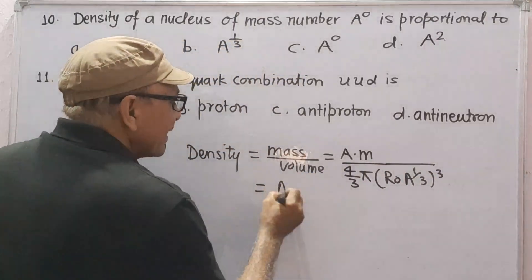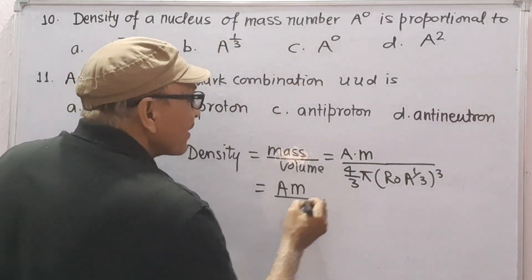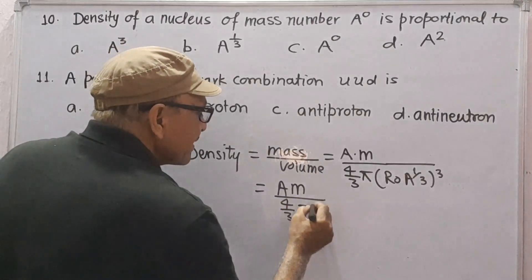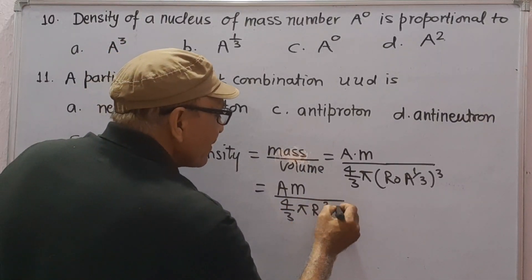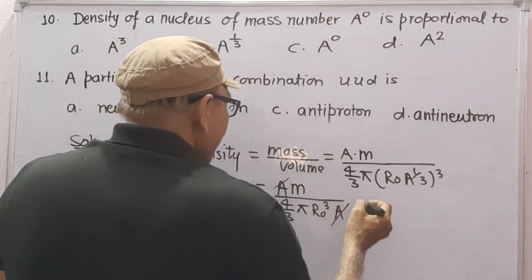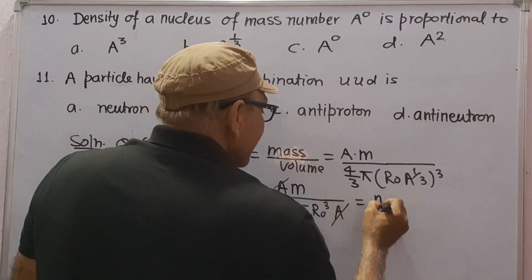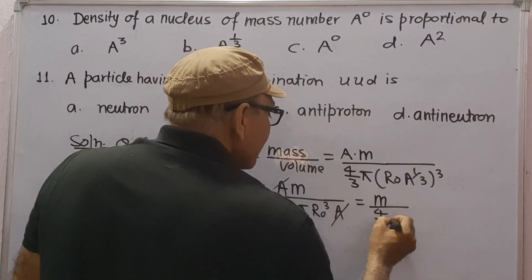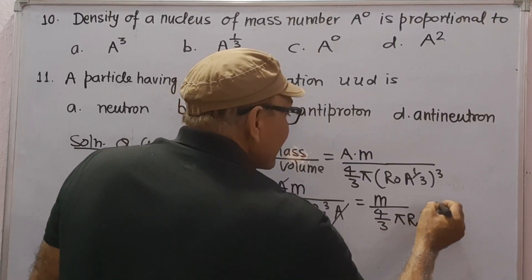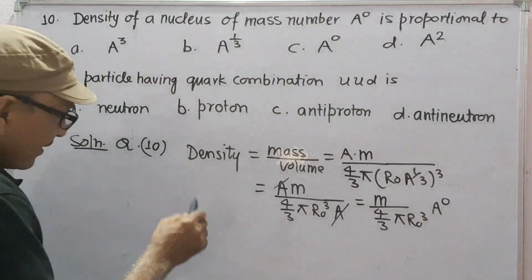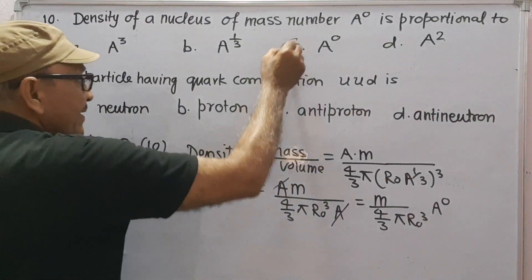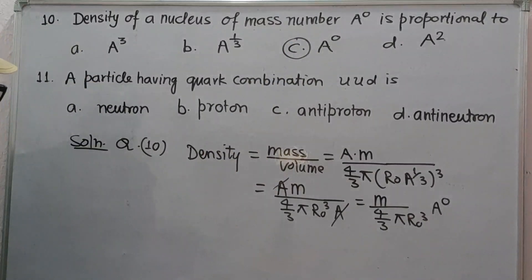So we get A into m upon 4 by 3 pi R naught cube into A. A becomes cancelled. This can be written as M upon 4 by 3 pi R0 cube into A to power 0. So density is proportional to A to power 0, that is correct option will be C.